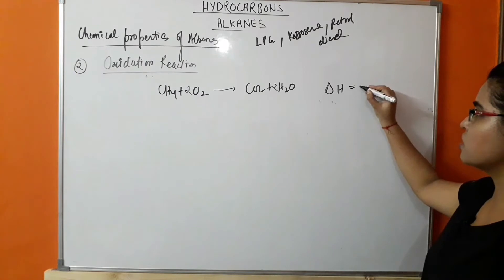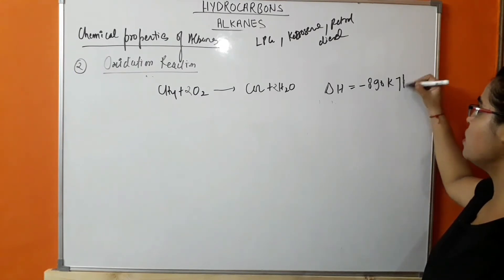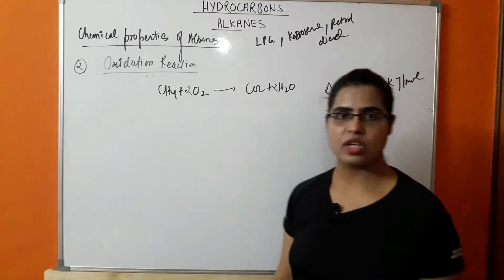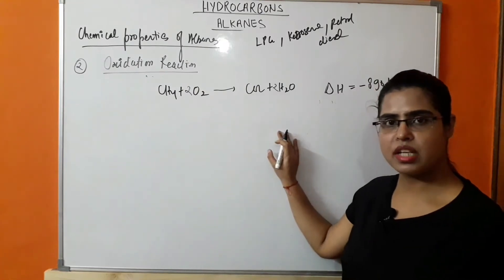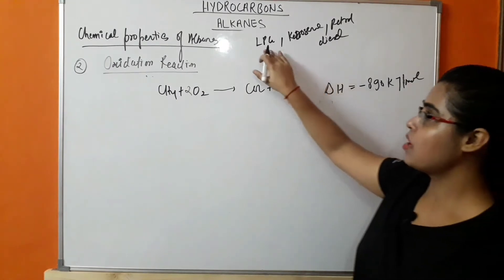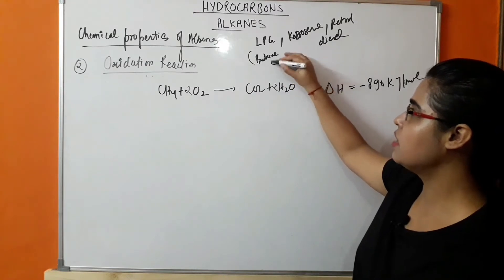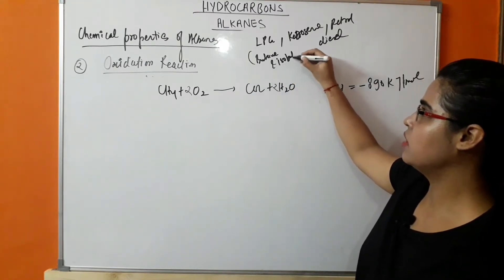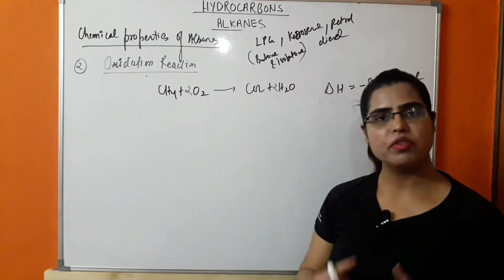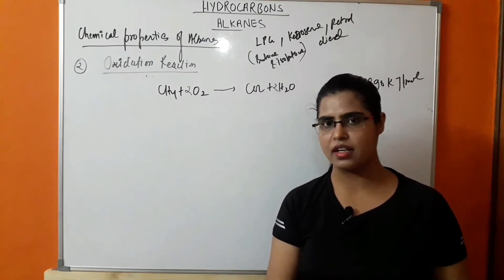This reaction is highly exothermic, releasing 890 kJ per mole of energy, which is why alkanes are used as fuel. Greater the number of carbons in the chain, greater will be the energy released. In LPG, it is a combination of butane and isobutane. Kerosene, petrol, and diesel are examples that produce high energy, so they are used as a source of energy.